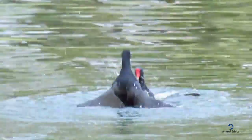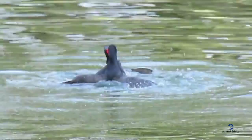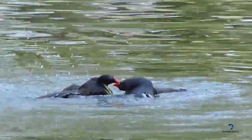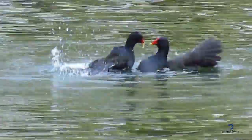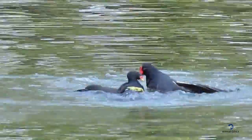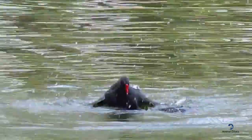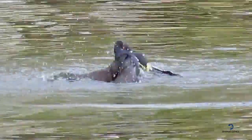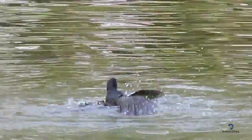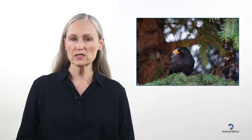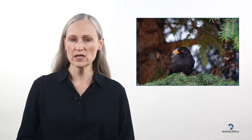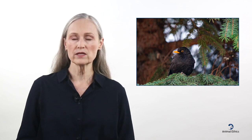Many species of birds are territorial, at least during the mating season, and some will fight to defend their territory. These fights can be brutal, leaving one or both parties with painful injuries. Blackbirds are extremely territorial, with both males and females fighting to protect their territory.